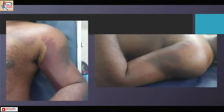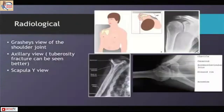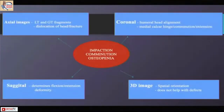It is extremely important to be very careful with our examination, especially of the neurovascular structures. Once we get our routine x-rays — AP, lateral, and axillary views — I always go for a CT scan. The CT scan is useful particularly for four things: first, the type of displacement of the tuberosities.